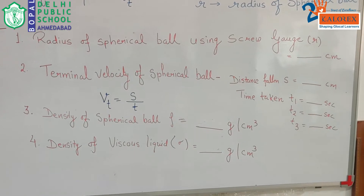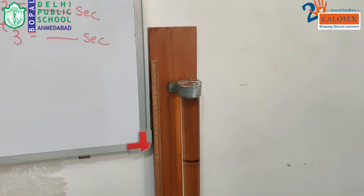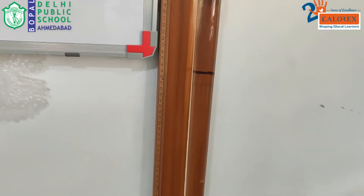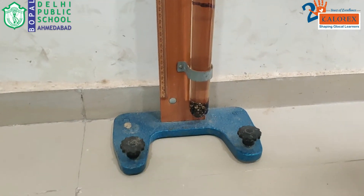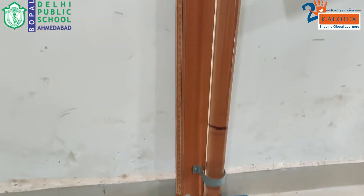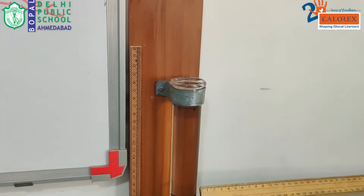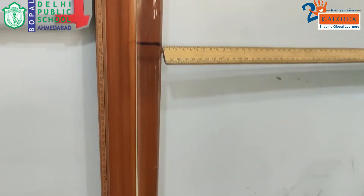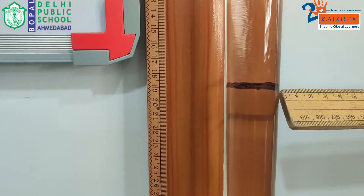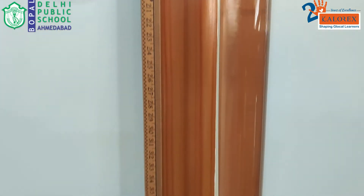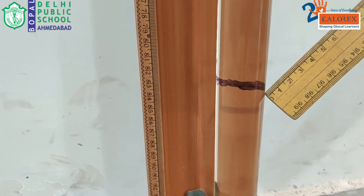After that, as you can see over here, we have taken a glass tube which is filled with glycerine. It is a long tube and the whole tube is filled with glycerine. On this tube we have made two marks — one near the top of the tube, as you can see in blue colour, and the other mark is at the bottom of the tube, which is also in blue colour.